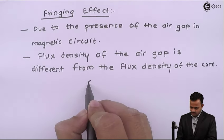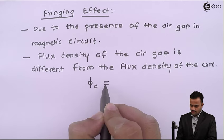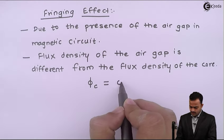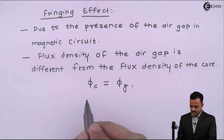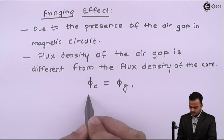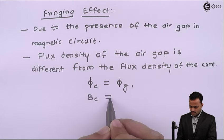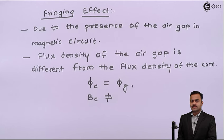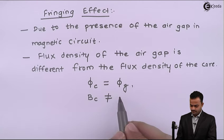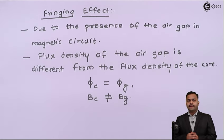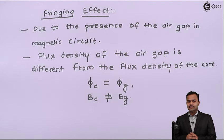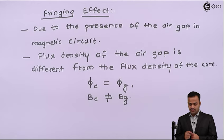Flux in the core is the same as flux in the air gap, but flux density of the core is not the same as flux density of the air gap. Sometimes an air gap is introduced in the magnetic circuit to have a lower flux density, in order to linearize the BH curve.